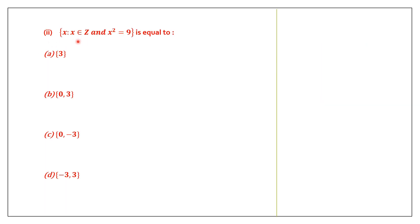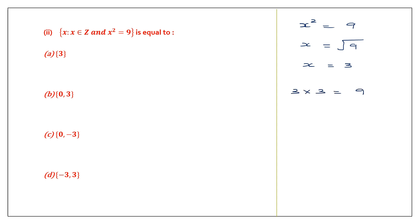Question 2. X is such that X belongs to integers and X squared equals 9. We are asked to find the elements in this set. X belongs to integers, so it can be positive or negative. X squared equals 9, so we find the square root of 9, which is 3. Because 3 into 3 is 9 and minus 3 into minus 3 is also 9 — minus into minus is plus. So the elements can be 3 and minus 3. The answer is option D.